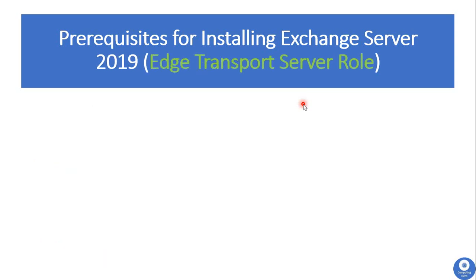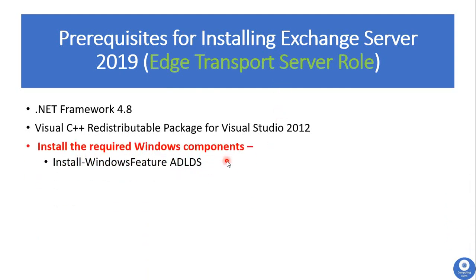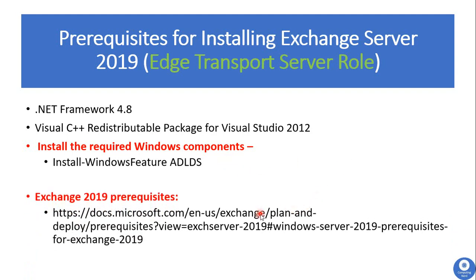Next, we will see the required prerequisites for installing the Edge Transport Server role. To install the Edge Transport Server role, you only need two software packages and one Windows component. Since this role is installed on a non-domain-joined machine, other Windows components or software are not required. You can download the software from the provided URL, and more details are available there as well.